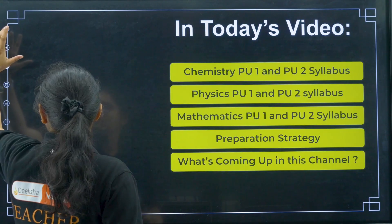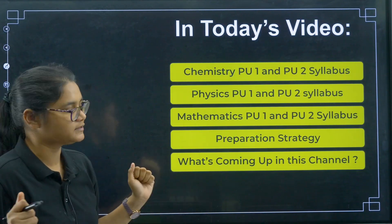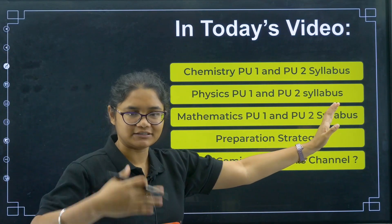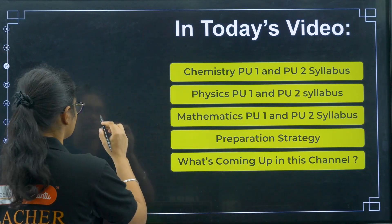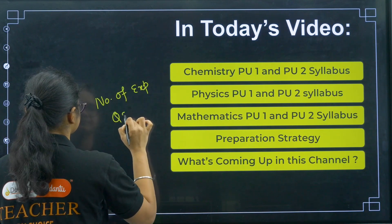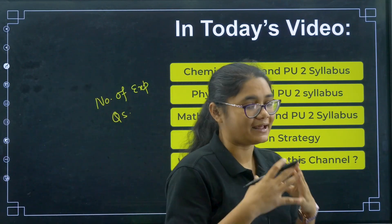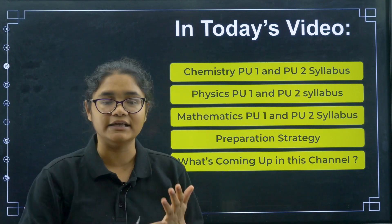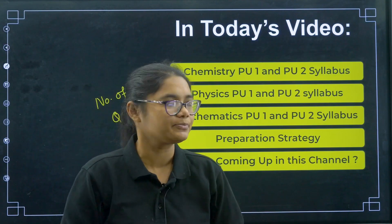So first, let's see what we have in today's session. We will be discussing chemistry PU1 and PU2 syllabus, then physics, and then maths. When I talk about the syllabus, I won't just tell you the chapter names — what's very important is the number of expected questions. This analysis is drawn by going through last 10 years of KSet papers, examining each year's chapters and questions.